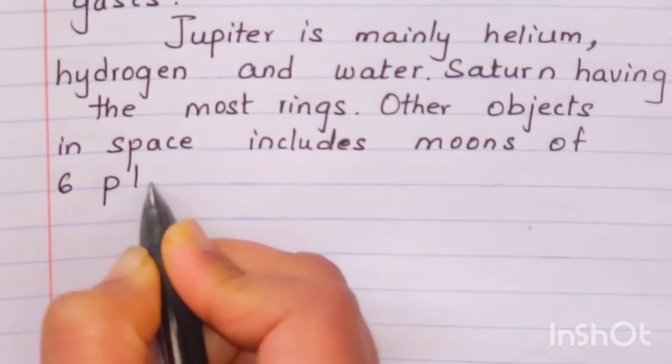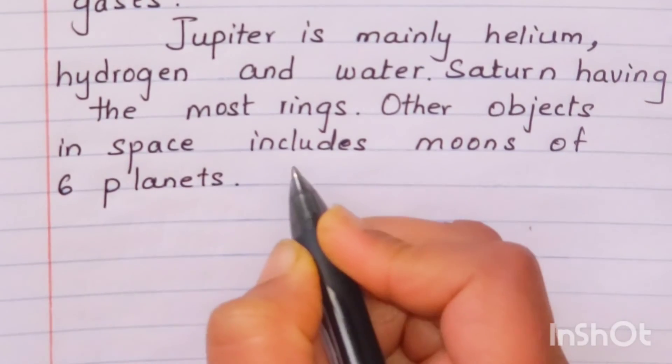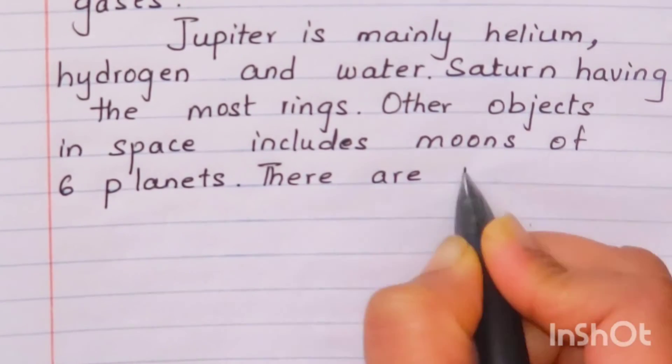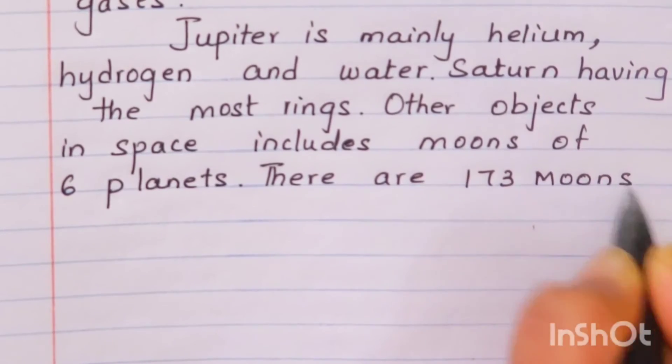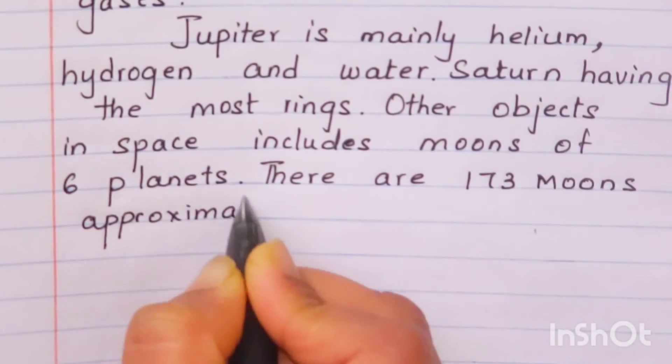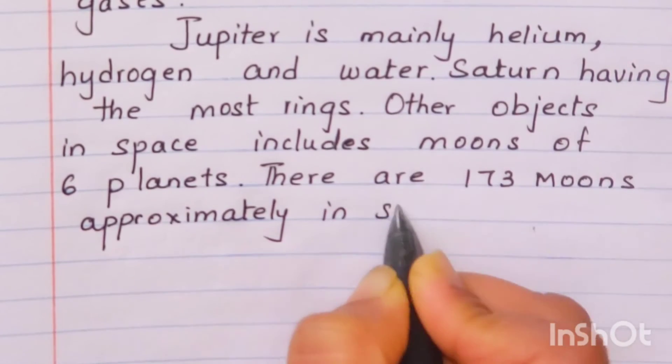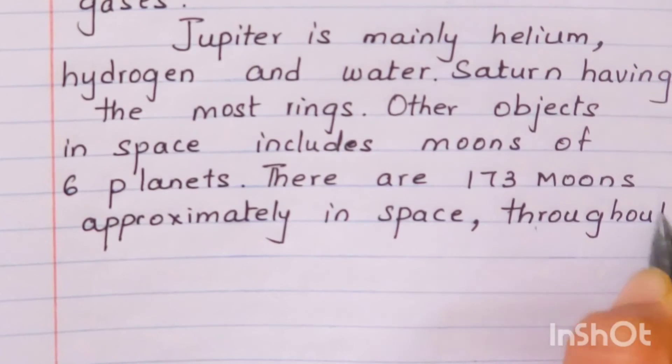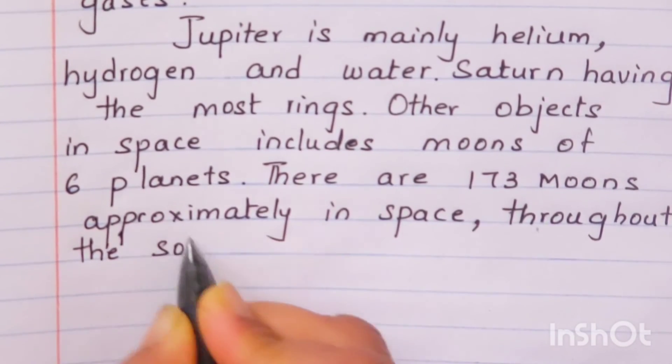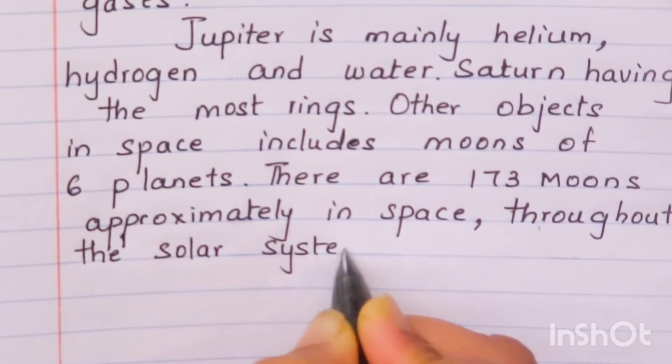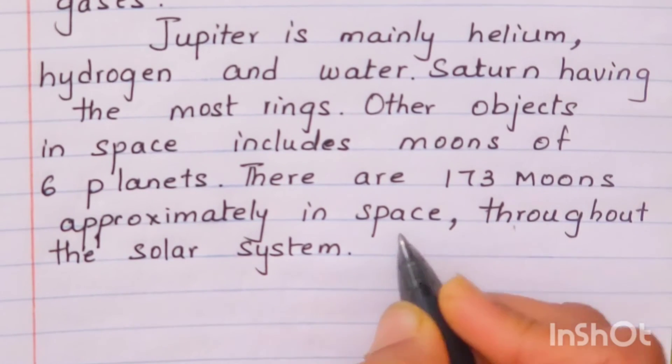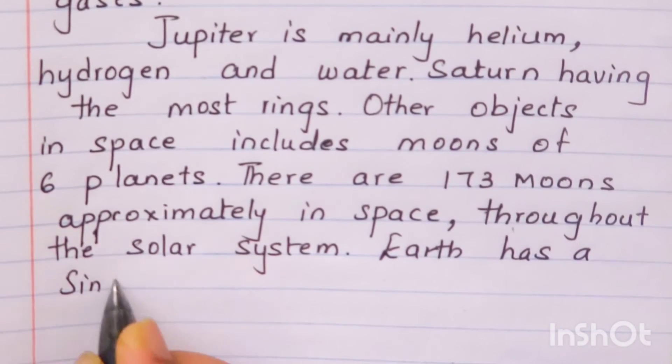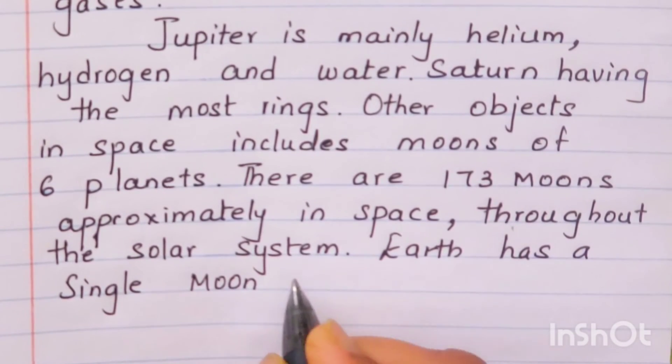Other objects in space includes moons of six planets. There are 173 moons approximately in space throughout the solar system. Earth has a single moon.